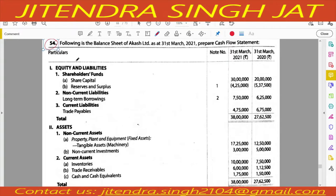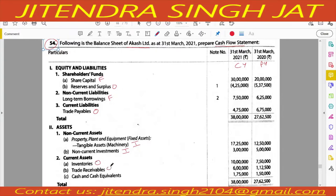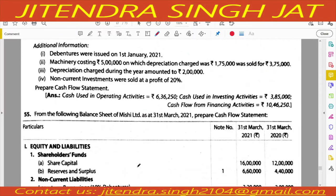Question number 54: following is the balance sheet of our cost limited as at 31st March 2020. We need to prepare a cash flow statement; current year and previous year both values are given. Capital will be recorded in financing activity, reserve and surplus in operating, long-term borrowing under financing activity, trade payables in operating, property plant and equipment and tangible assets in investing activity, and non-current investments in investing activity. Under current assets, inventory goes in operating, trade receivable in operating, and cash and cash equivalent under the cash head.